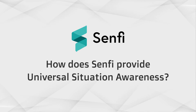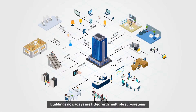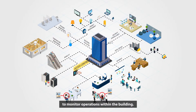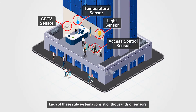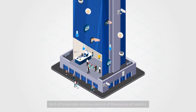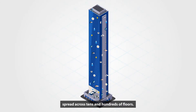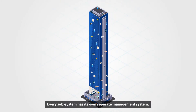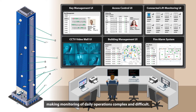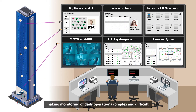How does SENFI provide universal situation awareness? Buildings nowadays are fitted with multiple subsystems to monitor operations within the building. Each of these subsystems consists of thousands of sensors spread across tens and hundreds of floors. Every subsystem has its own separate management system, making monitoring of daily operations complex and difficult.